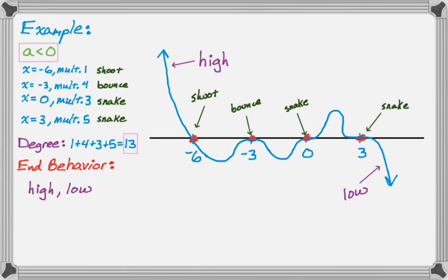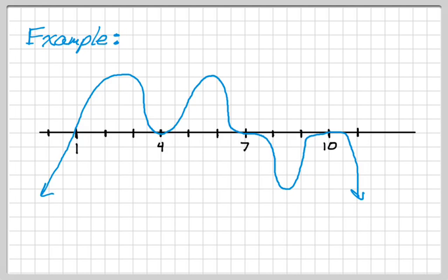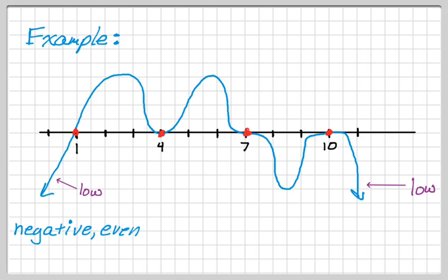Notice I'm not putting in a y-axis, because I have no idea what the y values are. But we could also write equations from graphs — let's actually do that in this next example, where we start with a graph. The zeros are at 1, 4, 7, and 10, and the graph starts low and ends low, so immediately I'm expecting a negative even degree polynomial.